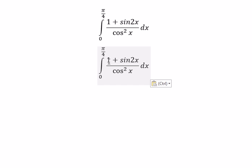About this one, we divide 1 over cosine x square and sine 2x. Sine 2x divide cosine x square.